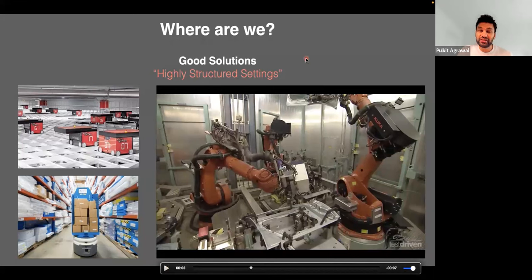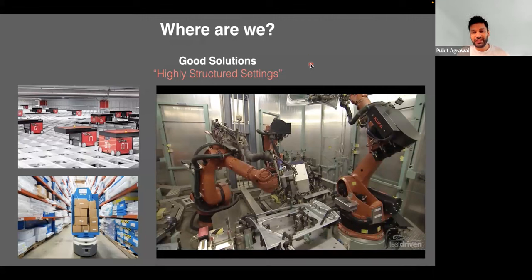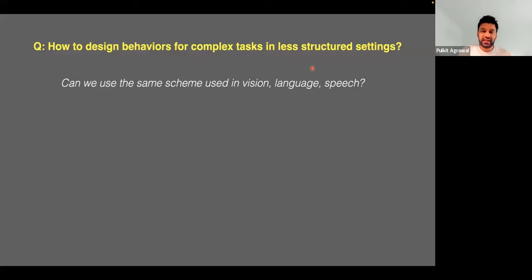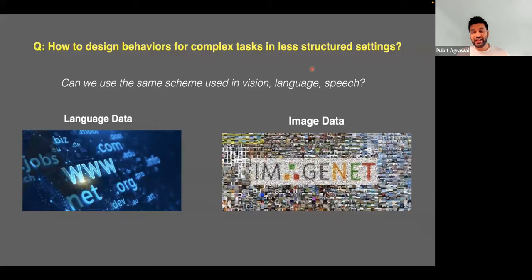The challenge right now in the field is really to move towards less structured settings — the open world assumption, where the environment may be unknown, the objects you're encountering might be unknown or in new configurations you have not seen before. This is what in machine learning you would call generalization. We have done this successfully in computer vision, language, and speech by collecting large amounts of data and training a model from it.